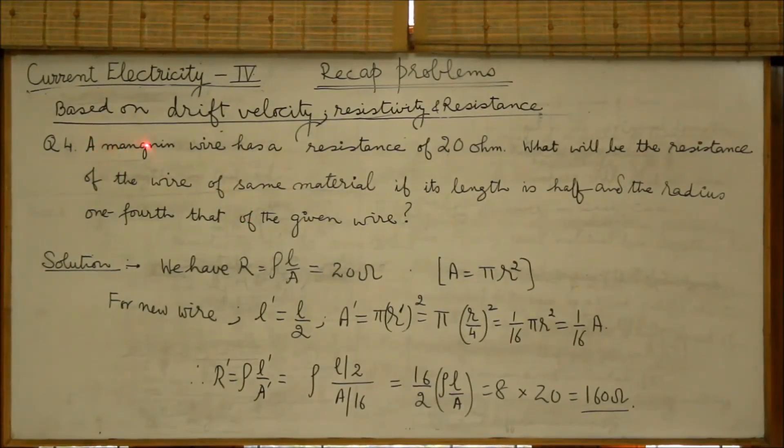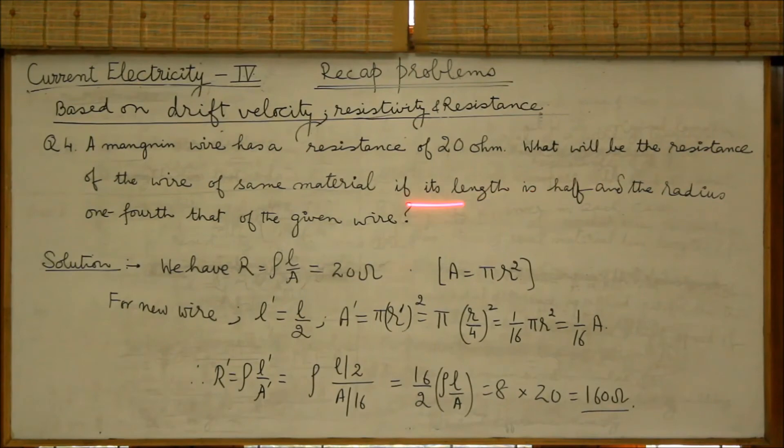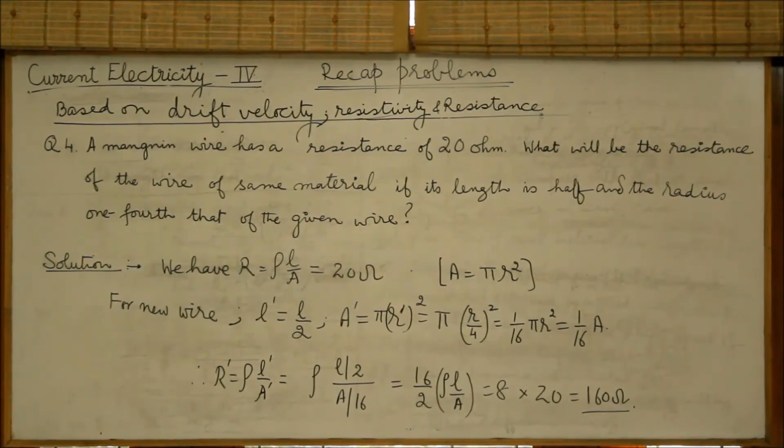Question number 4. A manganine wire has a resistance of 20 ohms. What will be the resistance of the wire of same material if its length is half and radius one-fourth that of the given wire?